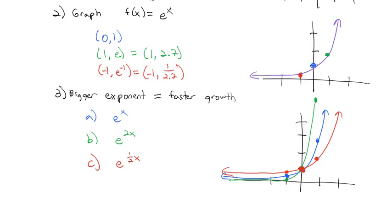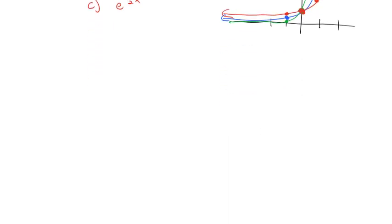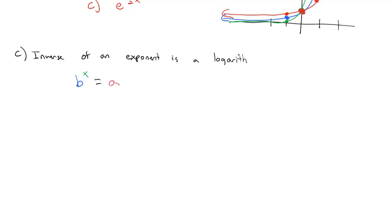Those are exponential functions. The opposite — the inverse of an exponential — is a logarithm. If b raised to some exponent equals some answer, that is the same as converting it to a logarithm: log base b of the answer equals the exponent. It's a rearrangement of the parts to solve for the exponent, so we can rewrite exponentials as logarithms.